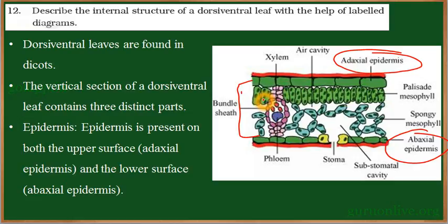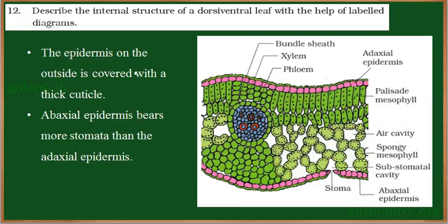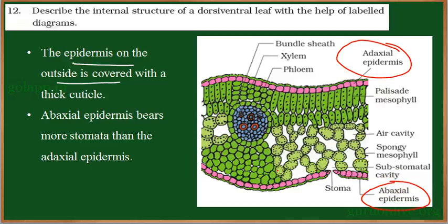Epidermis is the outermost covering layer of the leaf. Both upper and lower epidermis are covered by a protective thick layer. This green color structure is called cuticle. The cells in the epidermis secrete a thick waxy substance called cuticle, which prevents water and other substances from the atmosphere from entering inside the leaf and from the leaf releasing into the atmosphere. So it acts as a protective barrier.